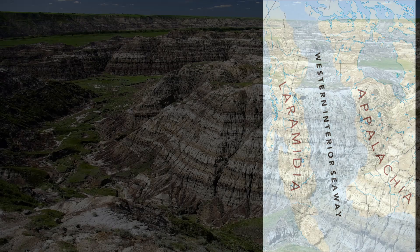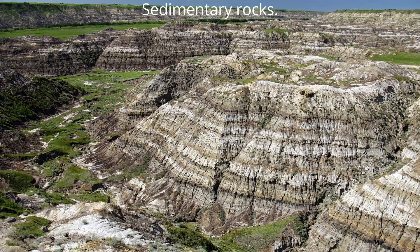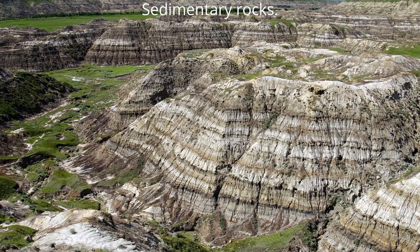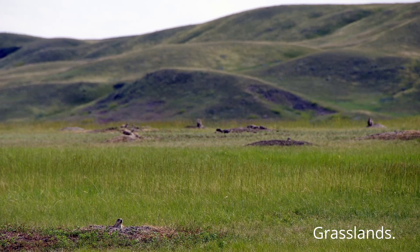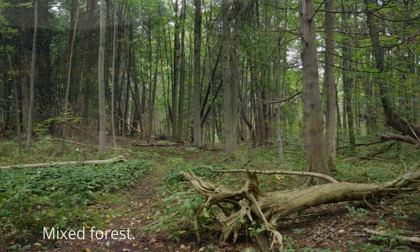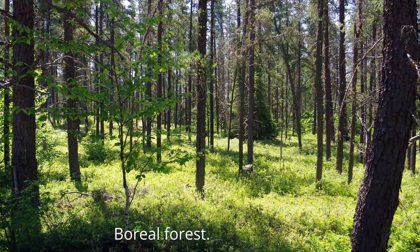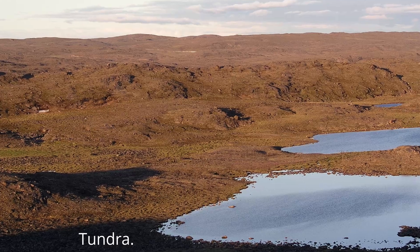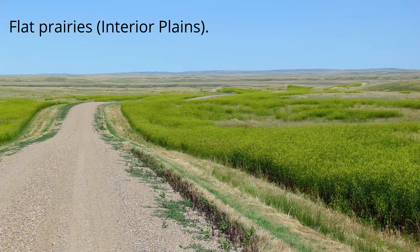The ocean ran from the Gulf of Mexico northward through the United States and Canada to the Arctic Ocean, splitting North America into two land masses: to the west, Laramidia, which would later develop into the Rocky Mountains, and to the east, Appalachia. The ancient ocean existed from about 100 million years ago to about 65 million years ago. Sedimentary rocks accumulated on the bottom and along the edge of that ocean, and those sedimentary rocks make up the interior plains. The southern part is characterized by grassland vegetation, further north is mixed wood forest and then coniferous boreal forest, and the northern part is dominated by treeless tundra. It is those softer sedimentary rocks that give the interior plains its flat landscape.